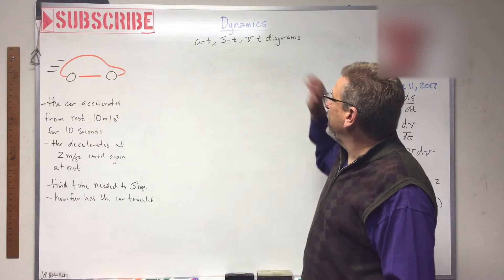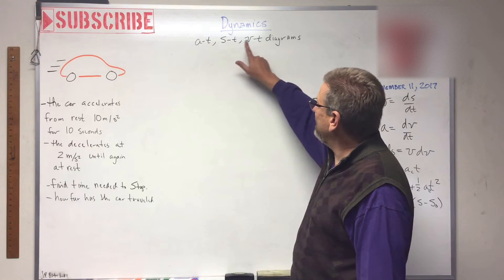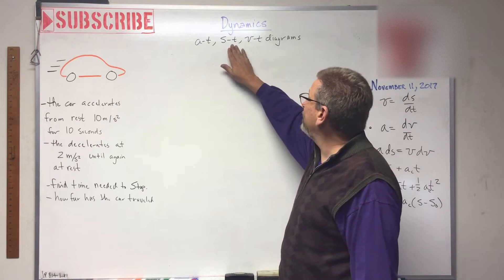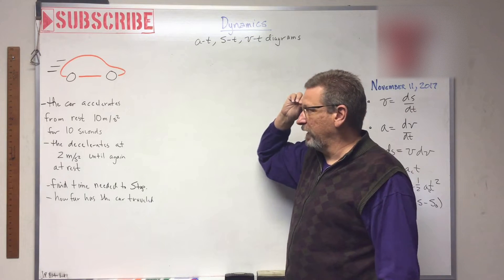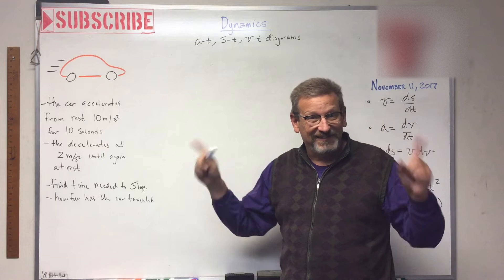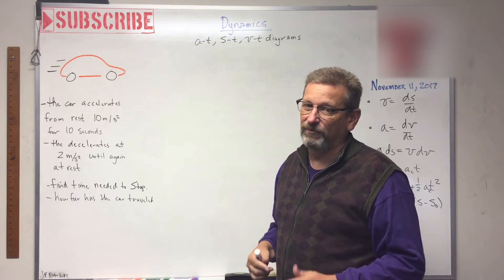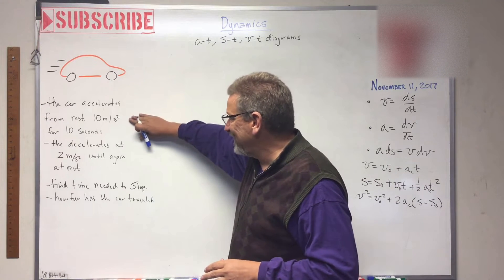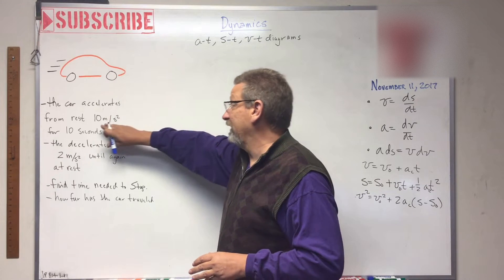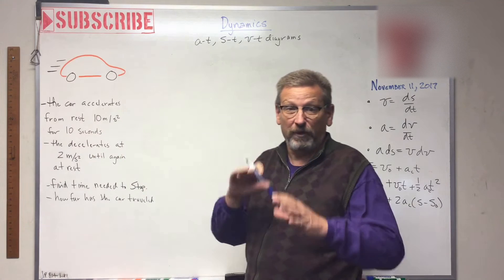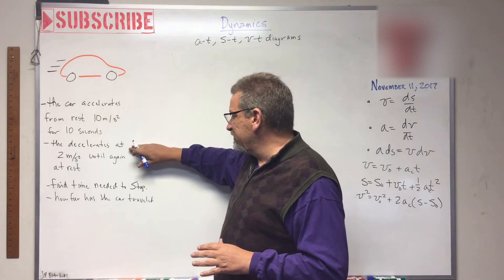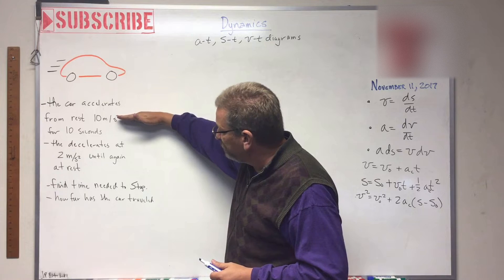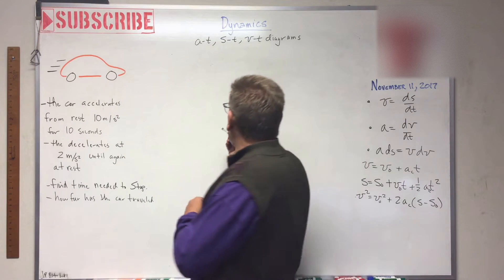Welcome back. Next section in dynamics, we're talking about AT, ST, and VT diagrams — acceleration versus time, position versus time, and velocity versus time on those diagrams. I think these are pretty easy, and if we go back to statics and check out shear-moment diagrams, you're going to see a lot of similarities. So I've got a car that accelerates from rest at 10 meters per second squared for 10 seconds, then decelerates at 2 meters per second squared until back at rest. Acceleration is constant for each of those parts.